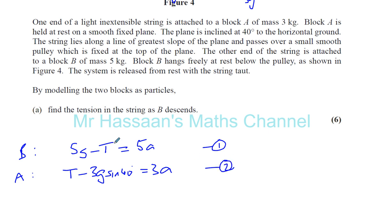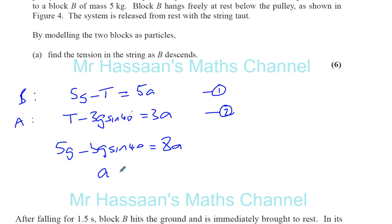So we have these two equations, one from A, one from B. For B you've got 5g minus T equals 5A, that's equation 1. For A you've got T minus 3g sine 40 equals 3A. Now the T's have got the same coefficient. If we add the two equations together we'll end up with 5g minus 3g sine 40 is equal to 8A, because minus T plus T will give you 0. So we can now work out what A is. A is going to be 5g minus 3g sine 40 over 8.